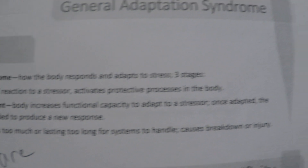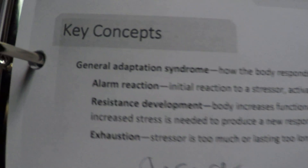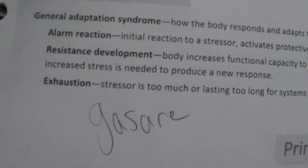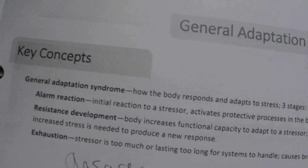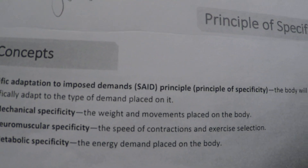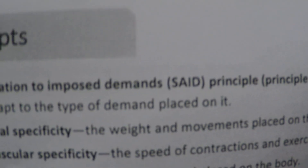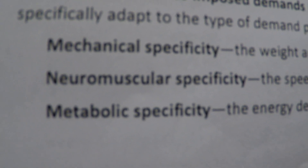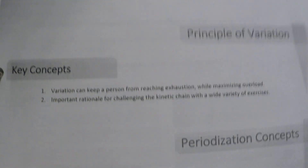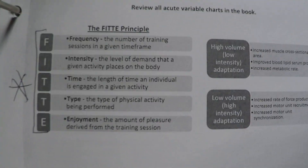The General Adaptation Syndrome describes how the body responds and adapts to stress in three stages: the alarm reaction, resistance development, and exhaustion. A mnemonic is GAS-ARE: General Adaptation Syndrome - Alarm Reaction, (resistance development), Exhaustion. The SAID principle - Specific Adaptation to Imposed Demands - means the body will specifically adapt to the type of demand placed on it. It involves mechanical specificity, neuromuscular specificity, and metabolic specificity - M&M.